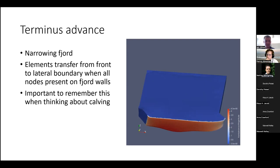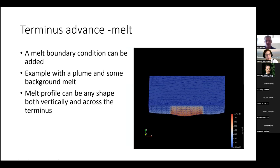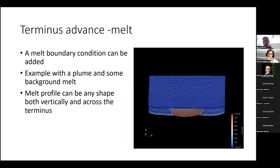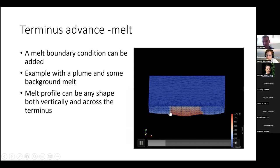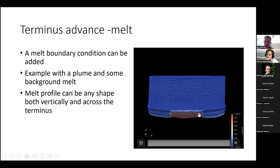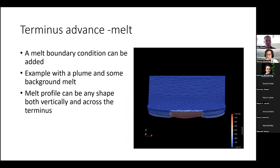You also have front melting — you've got your front advance and then you can take away melt, or have a stationary glacier where you're just applying melt. Here's an example of a glacier flowing towards you with a plume in the middle where there's strong melting, some background melt around it, and you can see this leads to substantial undercutting. Because of the remeshing benefits, you can apply any sort of melt profile both vertically and across the terminus.